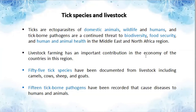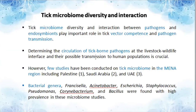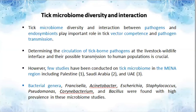We have documented 55 tick species from livestock — camels, cows, sheep, and goats — and 15 tick-borne pathogens have been recorded that cause diseases to humans and animals. Tick microbiome diversity and interaction between pathogens and endosymbionts play an important role in vector competence and pathogen transmission. Estimating the circulation of tick-borne pathogens at the wildlife-livestock interface and their possible transmission to human populations is very important. However, few studies have been conducted on tick microbiome in the MENA region, including in Palestine, Saudi Arabia, and two other sites.